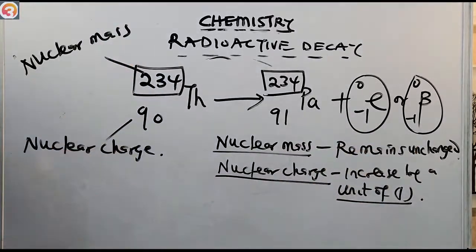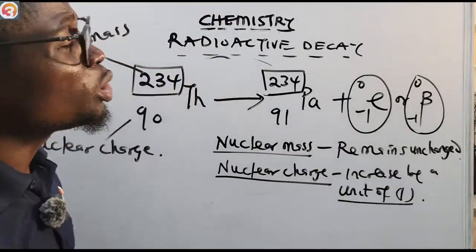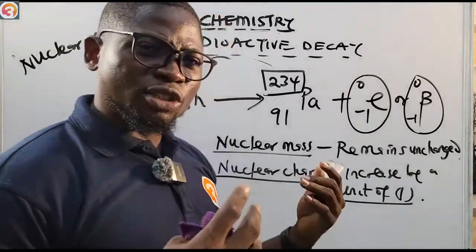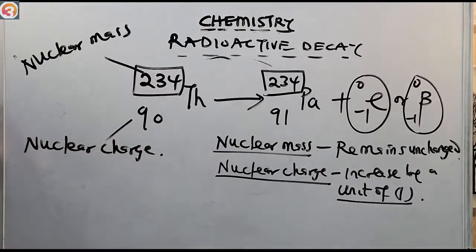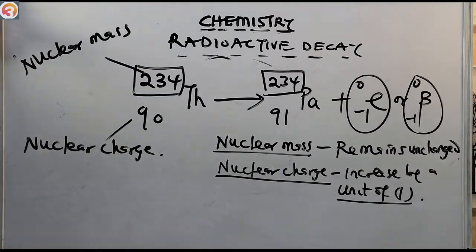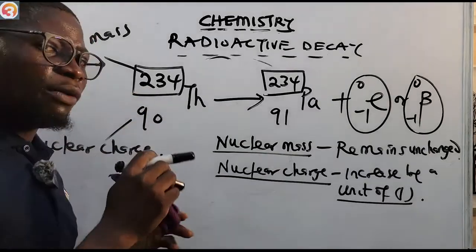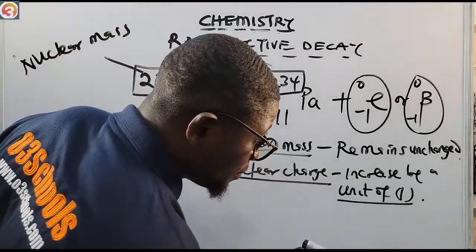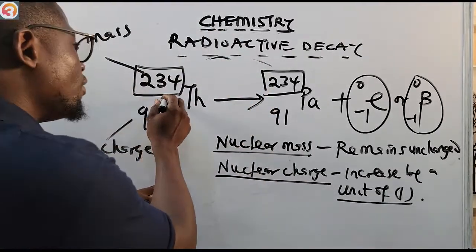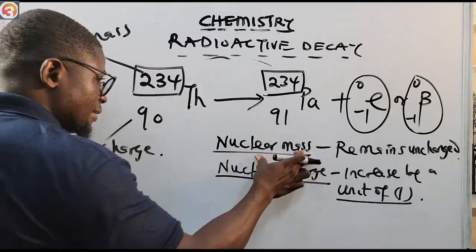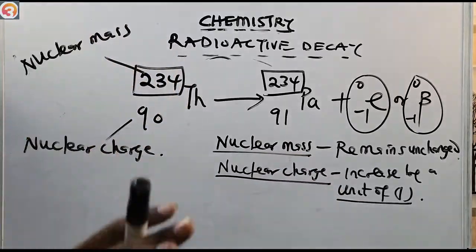It's clear. If you have any questions do not be scared — ask in the comment section. To summarize: for alpha decay, there is a decrease in mass by 4 units and a decrease in charge by 2 units. For beta decay, there is no change in mass but an increase in charge by 1 unit. We have established that. Now let's look at some past questions.